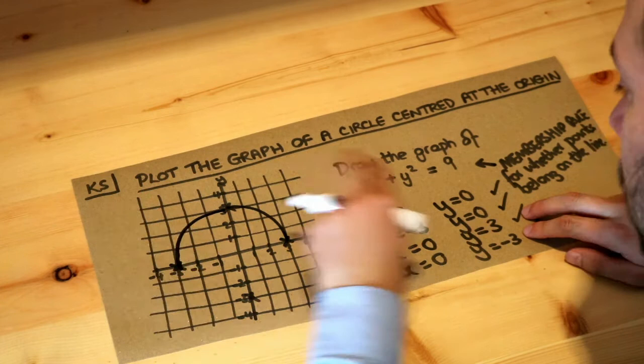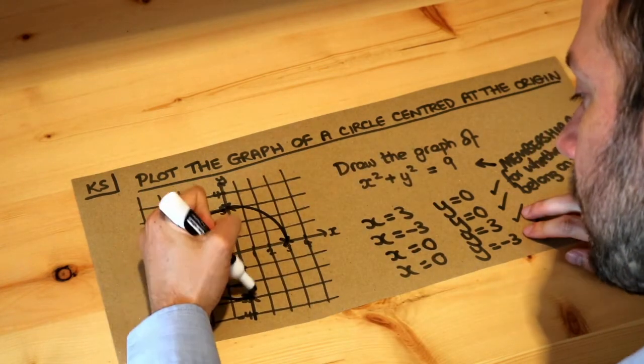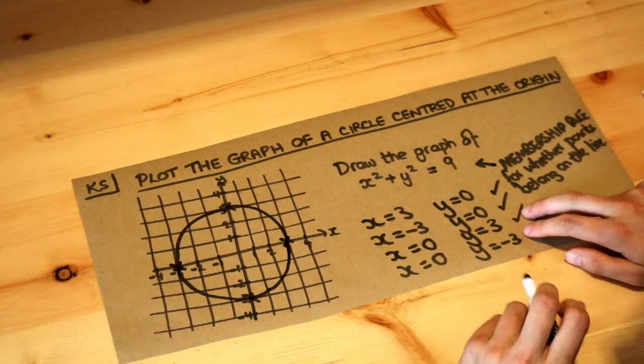you're going to get a circle type equation. Now I'm not going to give you the full proof of why it's a circle in this video, but you're going to get a shape like this.